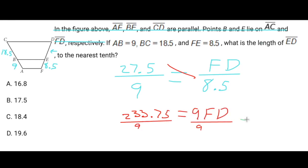Divide by 9. And then moving this over, we end up with FD equaling basically 25.97. It is to the nearest tenth. So I'm just going to say basically 26. Anyway, if FD, this whole thing is 26, then ED would be 26 minus 8.5, right? So 26 minus 8.5, that's going to be 17.5. So my answer is B.